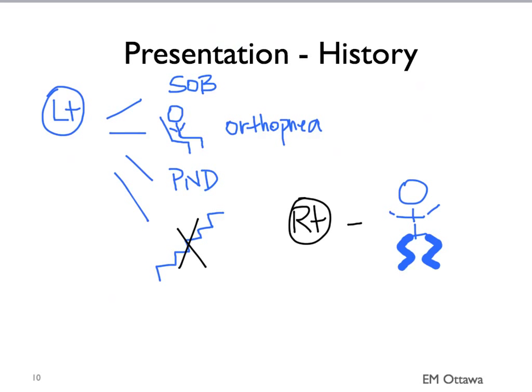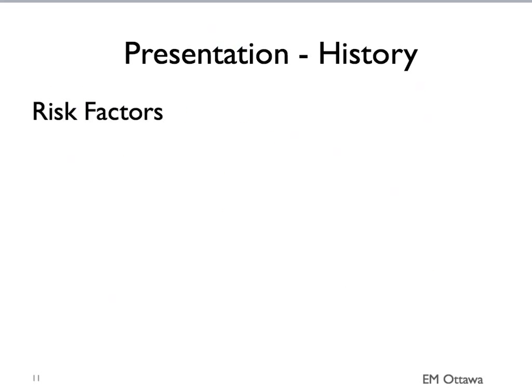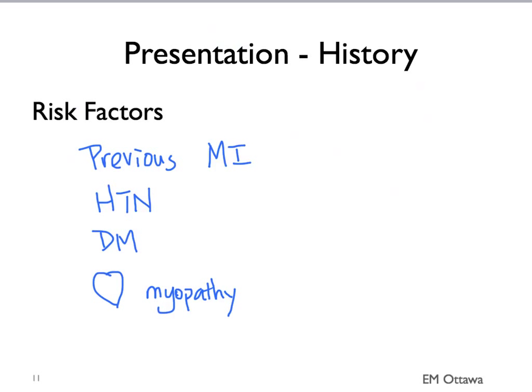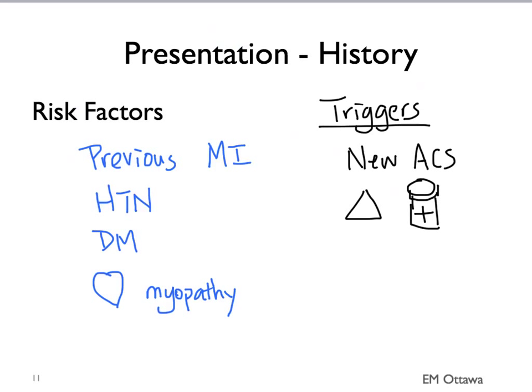Remembering how the patient with right-sided failure will be presenting with peripheral edema, you want to ask about weight gain and any presence of pitting edema. As for risk factors, they include previous myocardial infarction, hypertension, diabetes, or any history of cardiomyopathy. It is also important to ask about triggers, which may include a new cardiac event, change in their medications, or increasing salt intake.